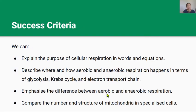By the end of this lesson you should be able to explain the purpose of cellular respiration in words and equations, describe where and how aerobic and anaerobic respiration happens in terms of glycolysis, Krebs cycle, and the electron transport chain, emphasize the difference between aerobic and anaerobic respiration, and compare the number and structure of mitochondria in specialized cells.